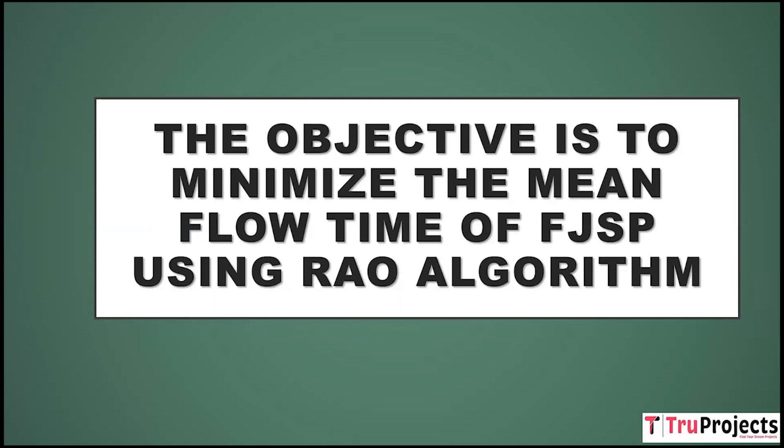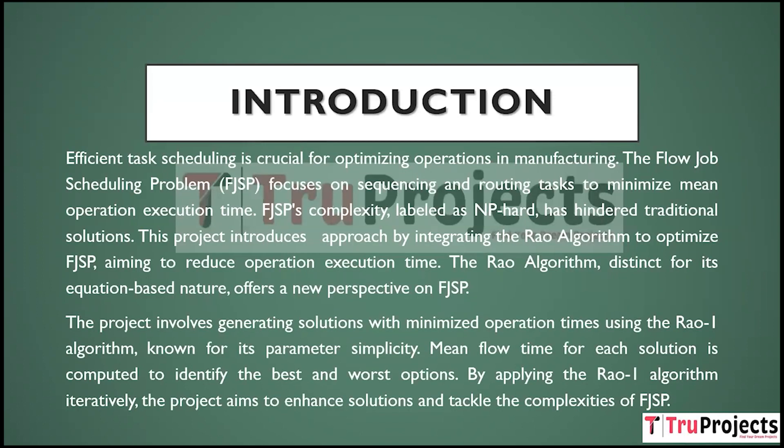Welcome to Tool Projects. In this video we will discuss the topic of minimizing the mean flow time of FJSP using the RAW algorithm. Efficient task scheduling is critical for optimizing manufacturing operations. The Flexible Job Shop Scheduling Problem (FJSP) is concerned with job sequencing and routing in order to reduce mean operation execution time.